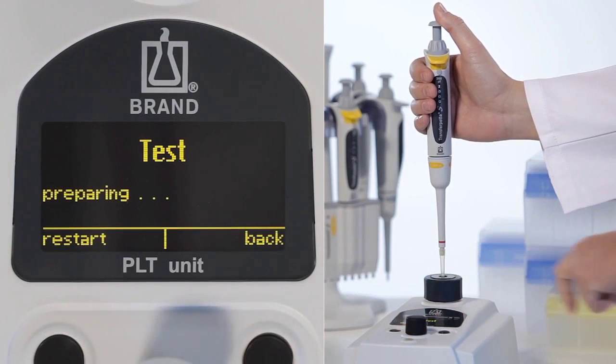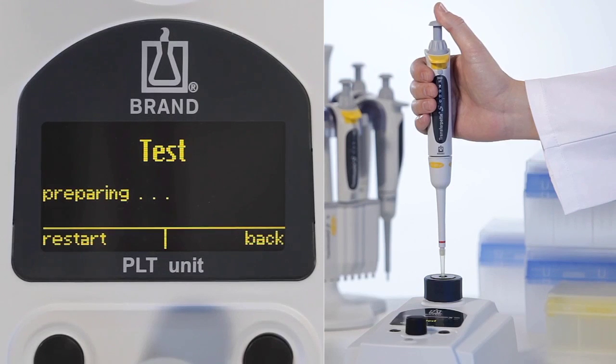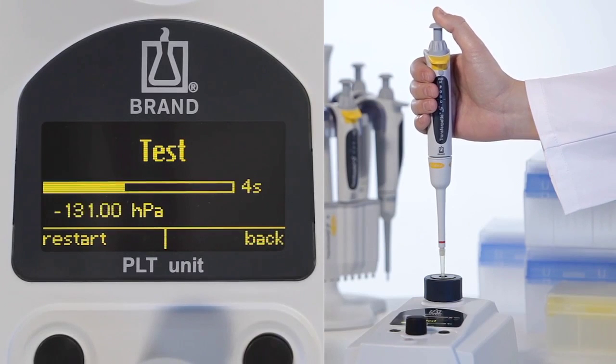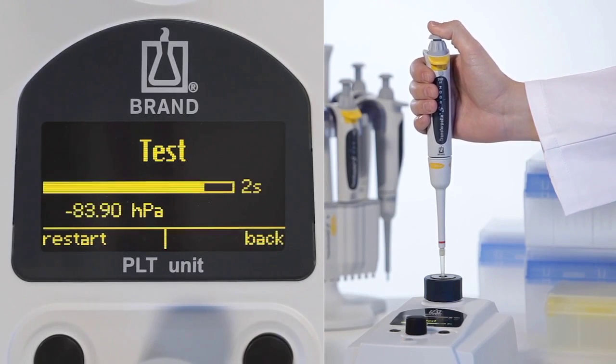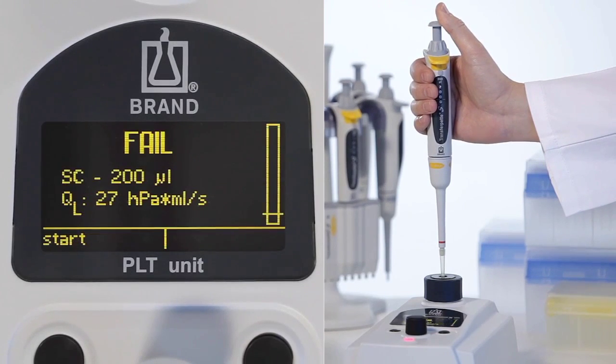We test a second pipette with a tip attached and again press down the pipetting button several times during the measuring phase. This pipetting system leaks.